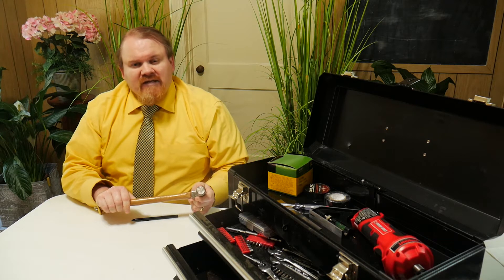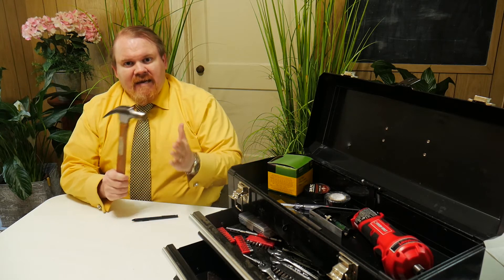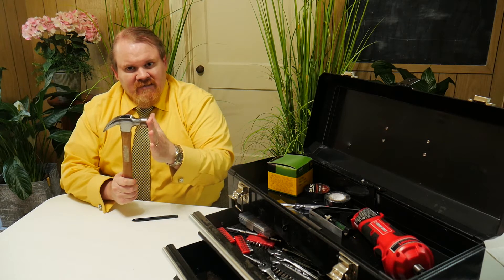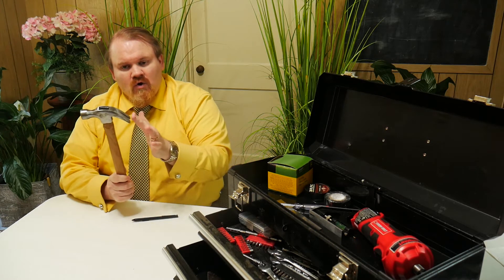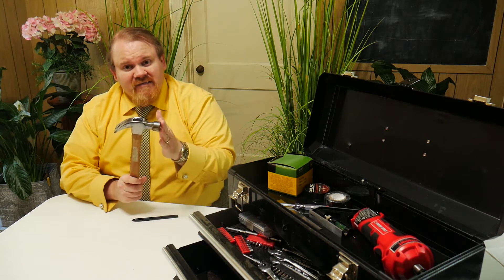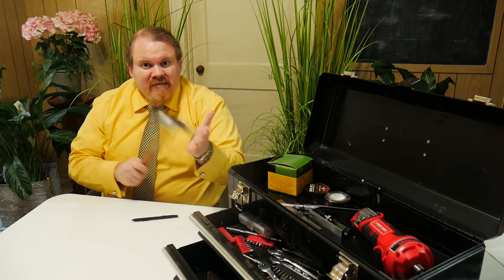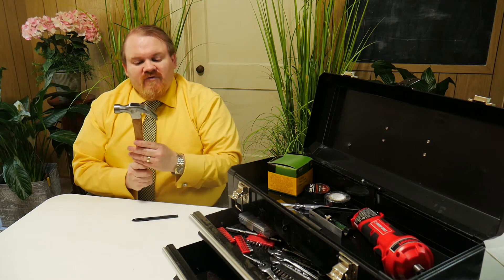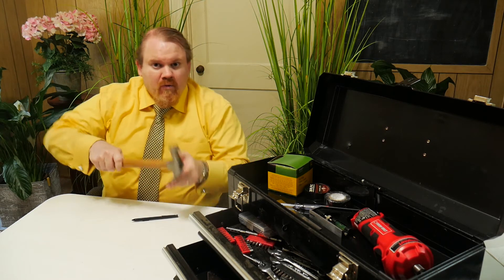You see the hammer is a very strong tool and it has two parts to it - it has the face and it has a hook. The face is what we use to hit the nail, right, and the hook is what we use to pull the nail out.